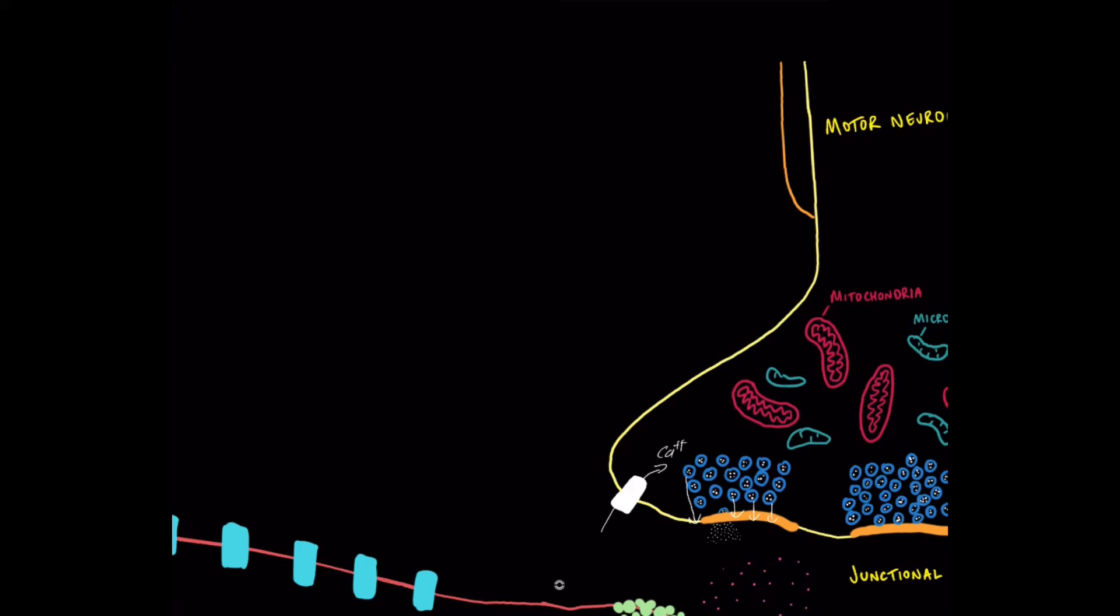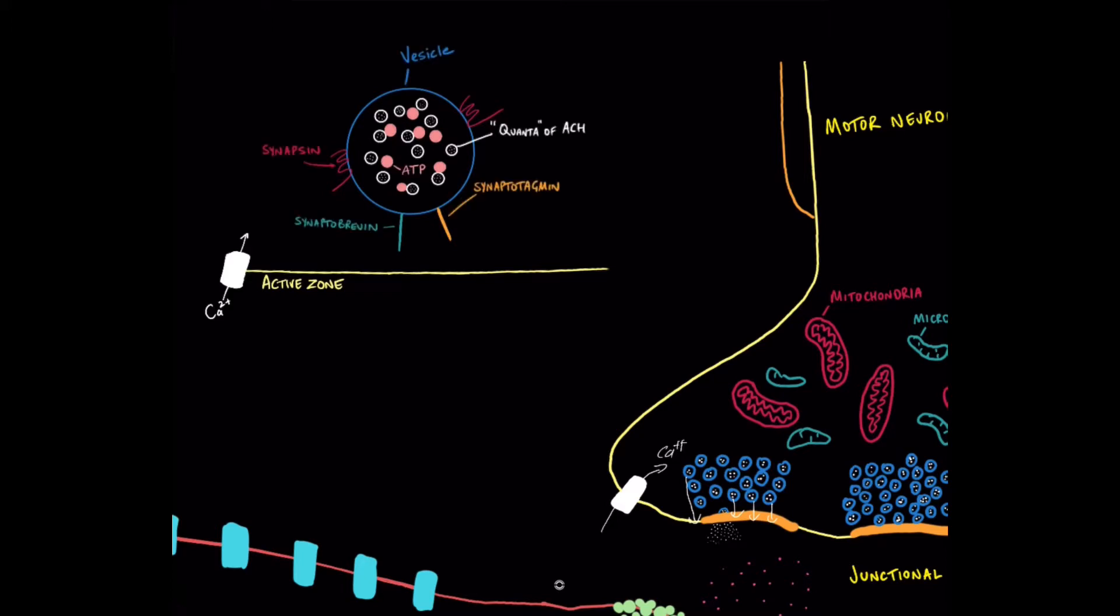And in this video we're just going to go over a couple of details of how that happens, mostly for interest's sake. It's not essential knowledge for managing patients in the operating room by any means. But let's look at this diagram. So that's a diagram of the vesicle and underneath you can see the little active zone that we had in the first video. I'm gonna bring up a couple of annotations here and then we're gonna try and make sense of all these annotations.